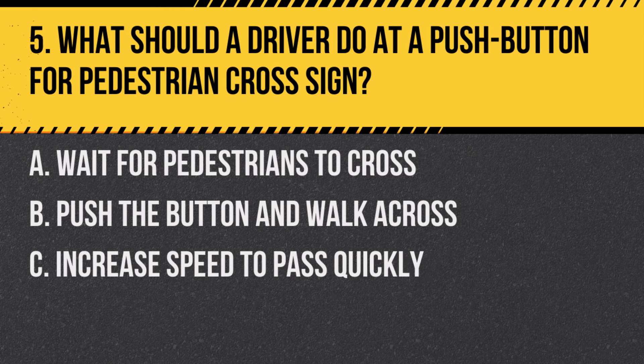Question 5: What should a driver do at a push button for pedestrian cross sign? A. Wait for pedestrians to cross. B. Push the button and walk across. C. Increase speed to pass quickly. Answer: A. Wait for pedestrians to cross. Drivers should stop and wait for pedestrians who have activated the crosswalk signal.